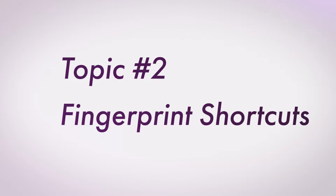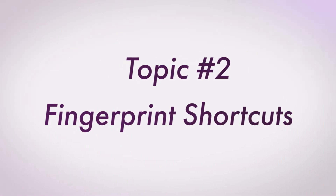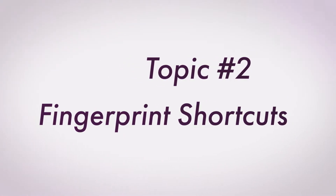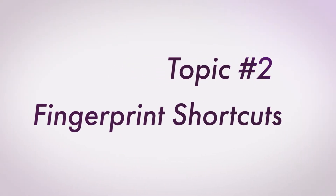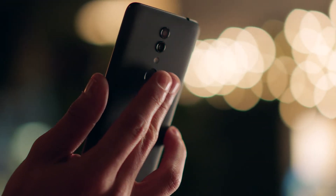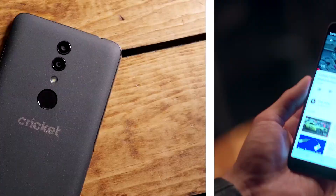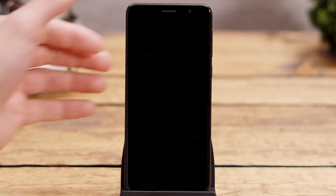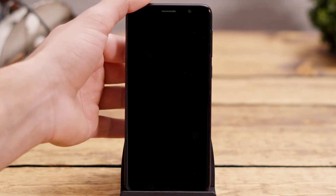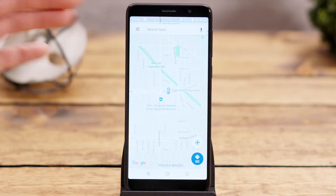Now let's check out topic number two: fingerprint sensor shortcuts — shortcut quicker and keep your phone secure. Another convenient method for shortcutting to key apps and functions while still keeping your phone secure is via the fingerprint sensor. Let's take a look at how this method is different from the function shortcuts on the lock screen.